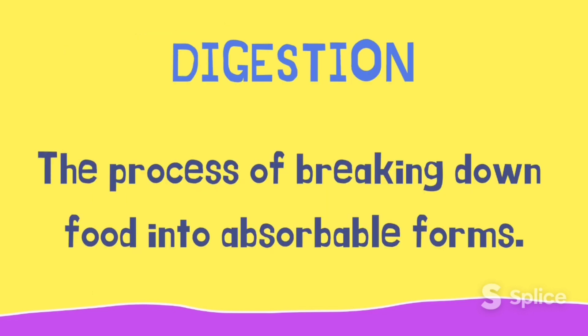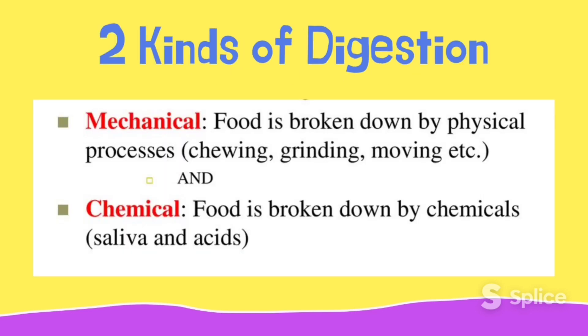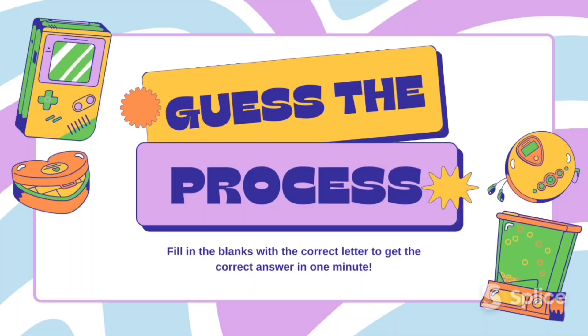The process of breaking down food into absorbable forms is called digestion, and it has two types: mechanical digestion and chemical digestion. Mechanical digestion is the physical breaking down of food into smaller pieces, while chemical digestion uses enzymes and acids to break down the food that we eat.